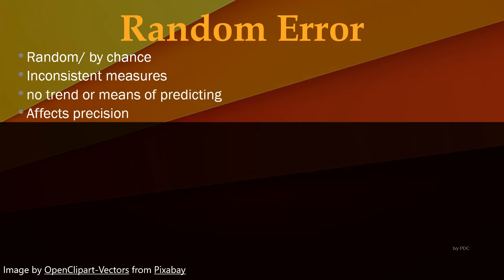The first type of error is random error, and as the name implies, these are different types of error that occur randomly or by chance. These types of errors in measurement lead to measured values being inconsistent when repeated measures are taken. Random errors are unpredictable events in measurement, therefore giving no trend or no means of predicting its occurrence. Random error affects precision.